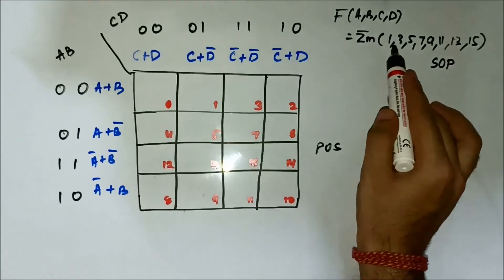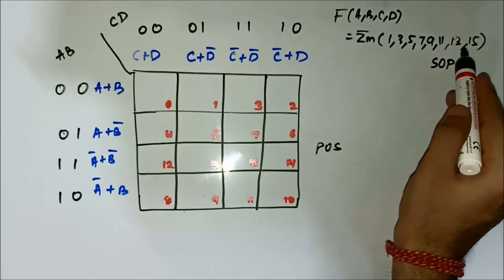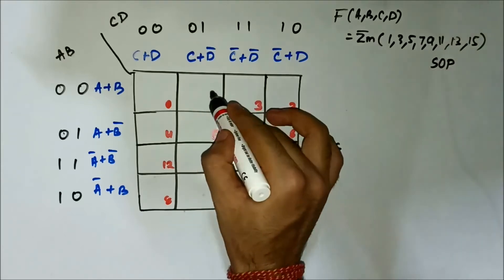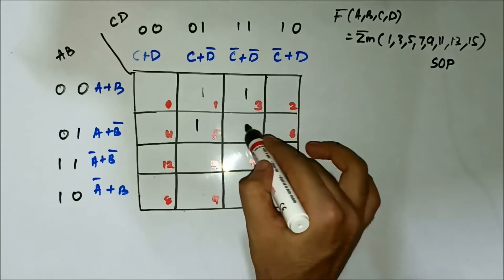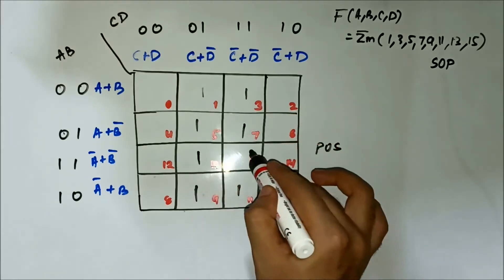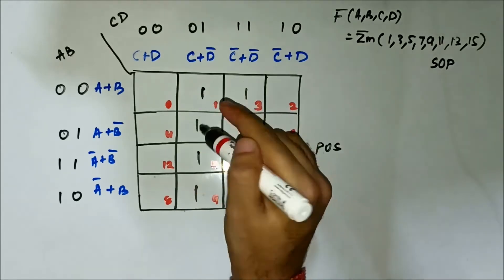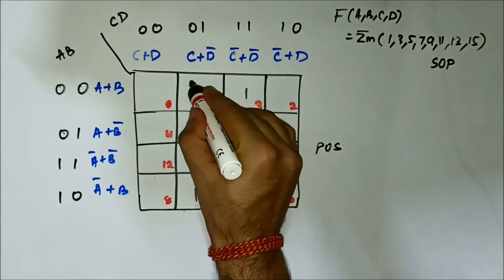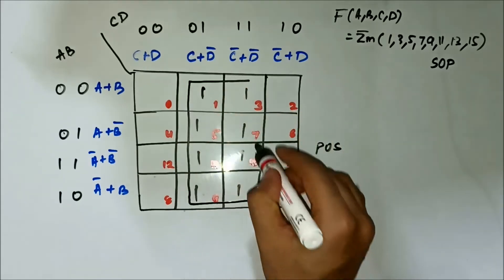The minterm values are 1, 3, 5, 7, 9, 11, 13, 15. So mapping these values, what we can do is form an octet involving these eight cells.